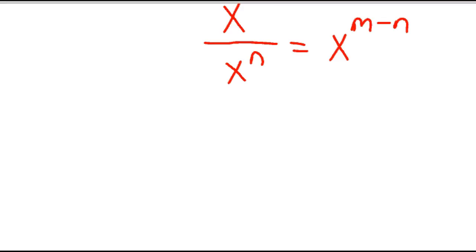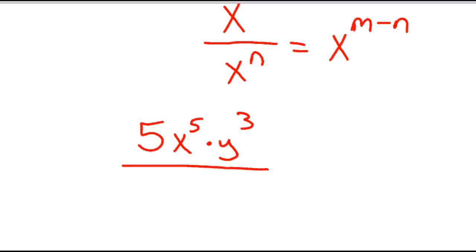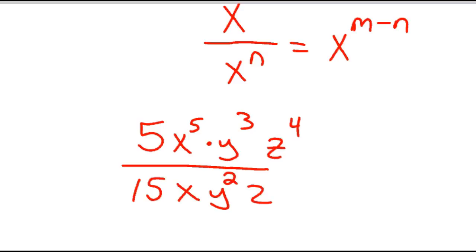Let's do something a little more difficult. Let's say you had 5x to the 5th times y to the 3rd times z to the 4th, over 15x times y squared times z to the 3rd.